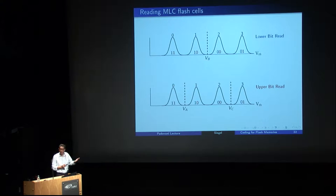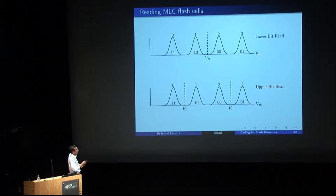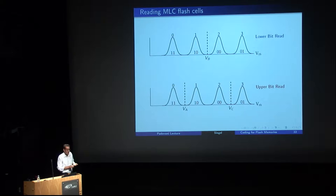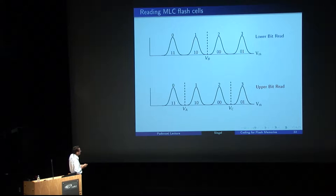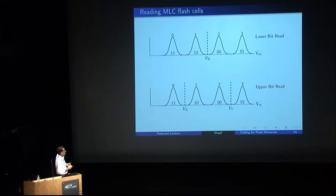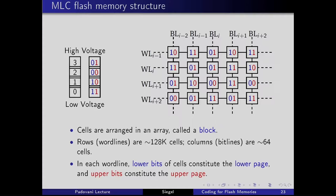To recover the upper bit, you use two threshold comparisons VA and VC: if the threshold voltage is less than VA or greater than VC, the upper bit is zero. These cells are arranged in a flash memory device in a block — this is where the two-dimensional component of the story begins.